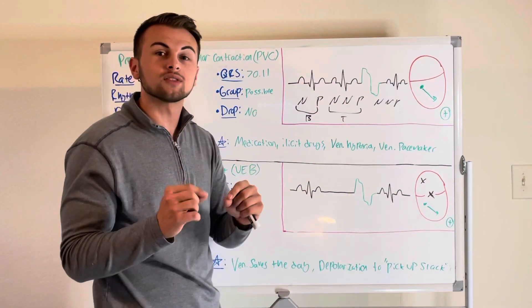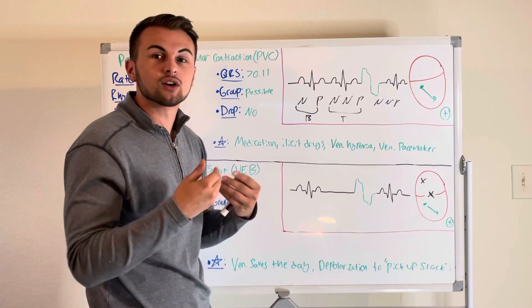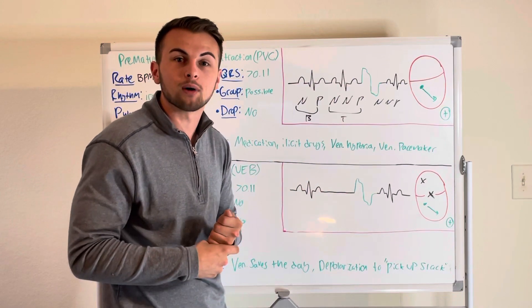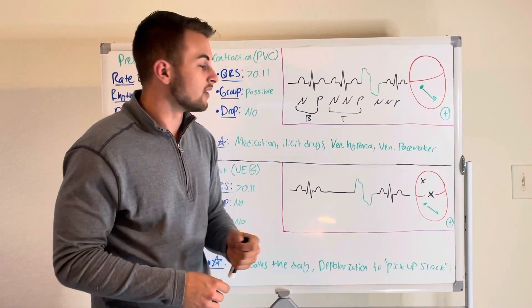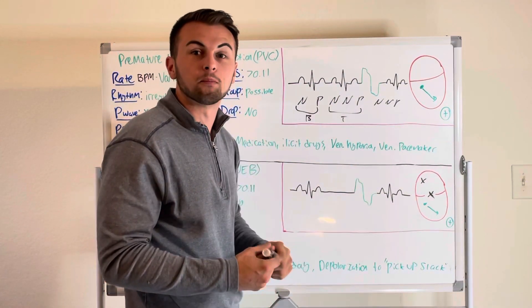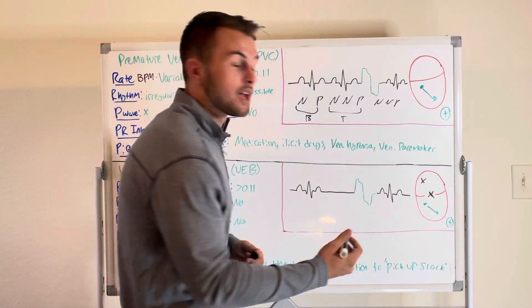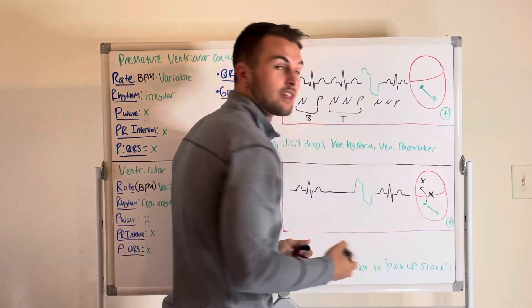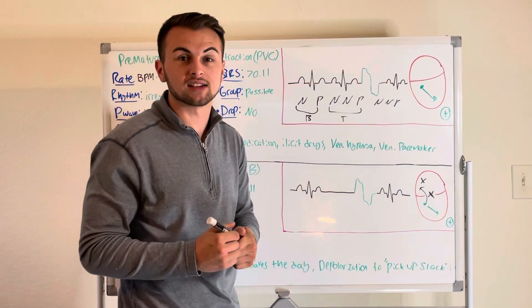So an important thing to note here is that there is what is called a non-compensatory pause. This means that the impulse that was generated by the ventricles has reached the SA node and depolarized the SA node.